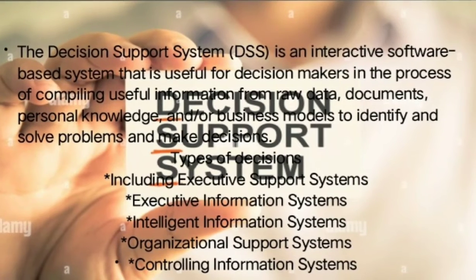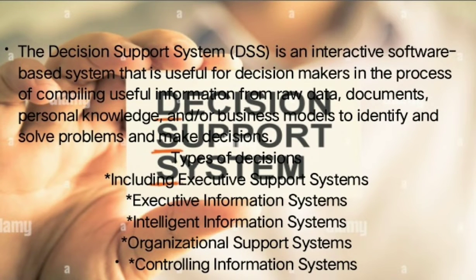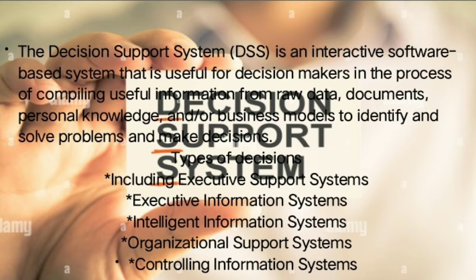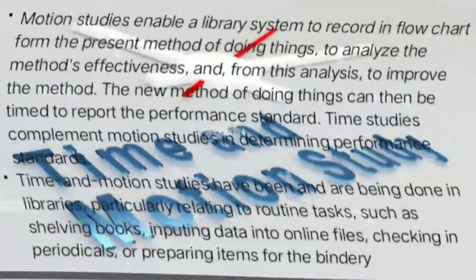The decision support system is an interactive software-based system that is useful for decision makers in the process of compiling useful information from raw data, documents, personal knowledge, and business models to identify and solve problems and make decisions. Types include executive support systems, executive information systems, intelligent information systems, organizational support systems, and controlling information systems.